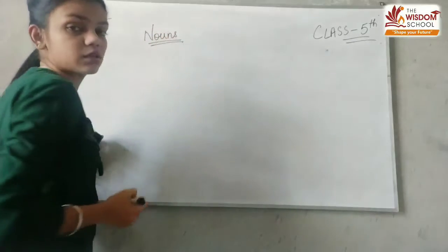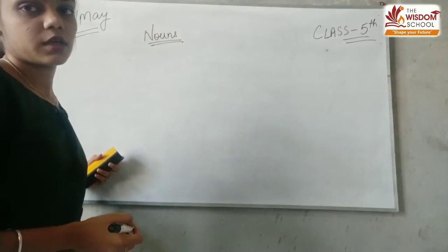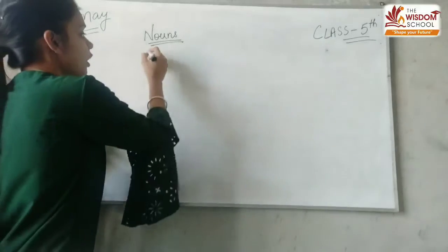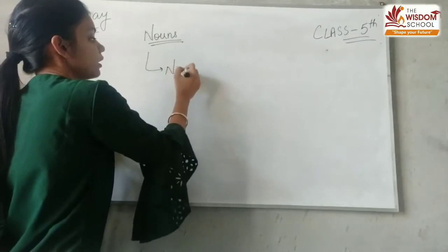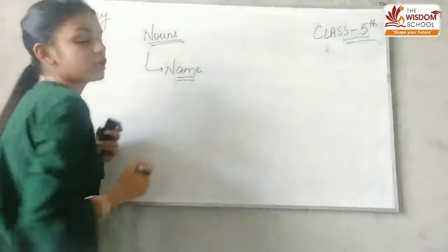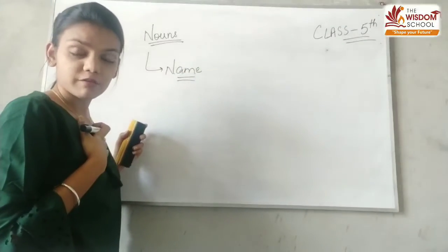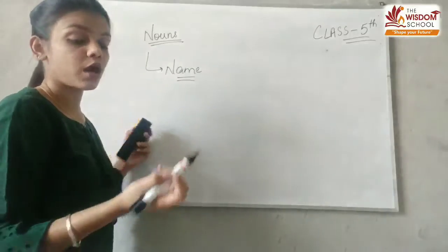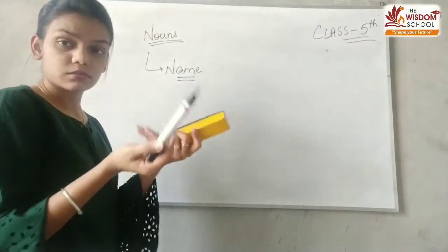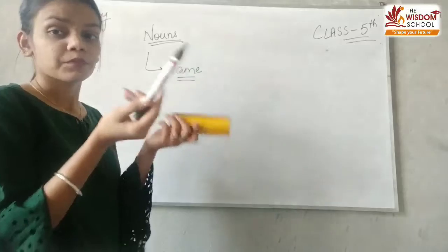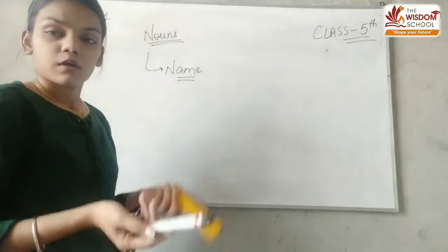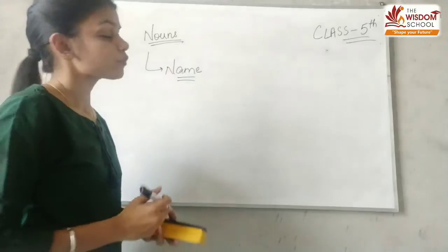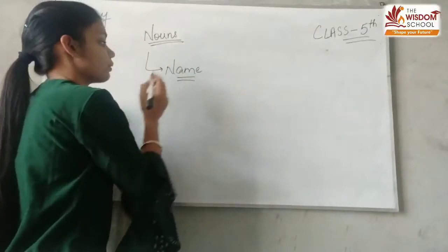First thing is, what are nouns? Everything we see, jo bhi chizein hain, they all have a certain name. Sab chizoh ka naam hai. Even I am having a name, mera bhi ek naam hai, aapka bhi name hoga. Mere haat mein jo ye cheezein hain, these are also having names. Inka bhi ek name hai. Clear? Sabhi chizoh ka naam hota hai.